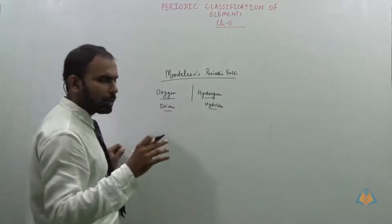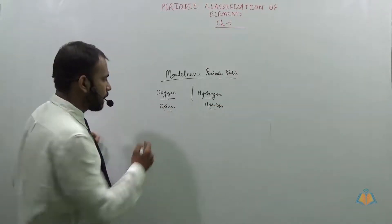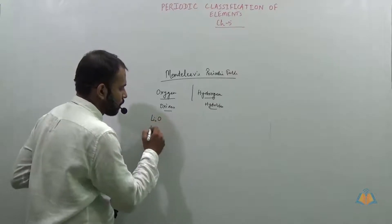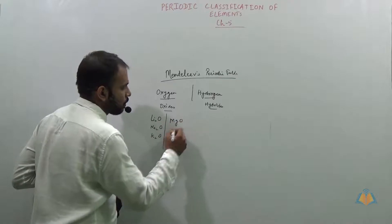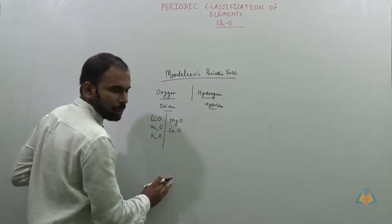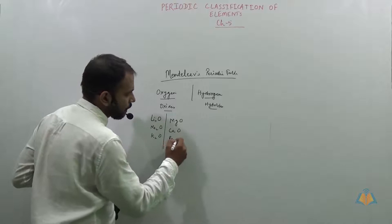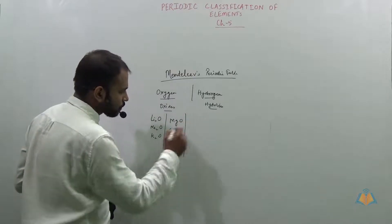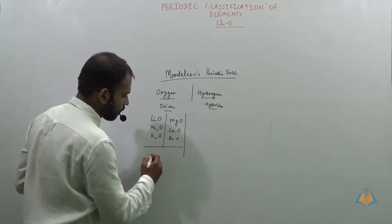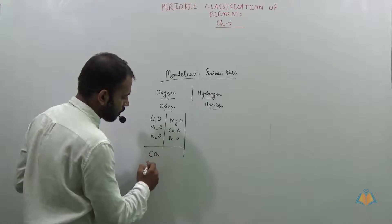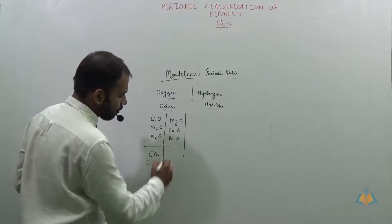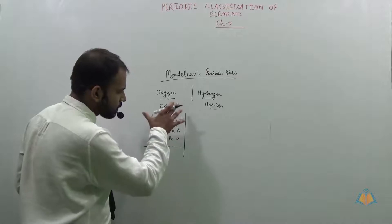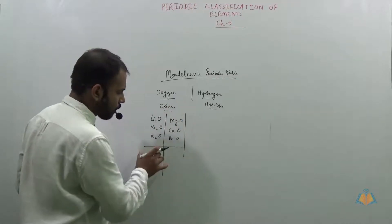When elements form the same kind of oxides — for example Li₂O, Na₂O, K₂O, MgO, CaO, BeO, CO₂, SiO₂ — these are the elements which form the same kind of oxides.